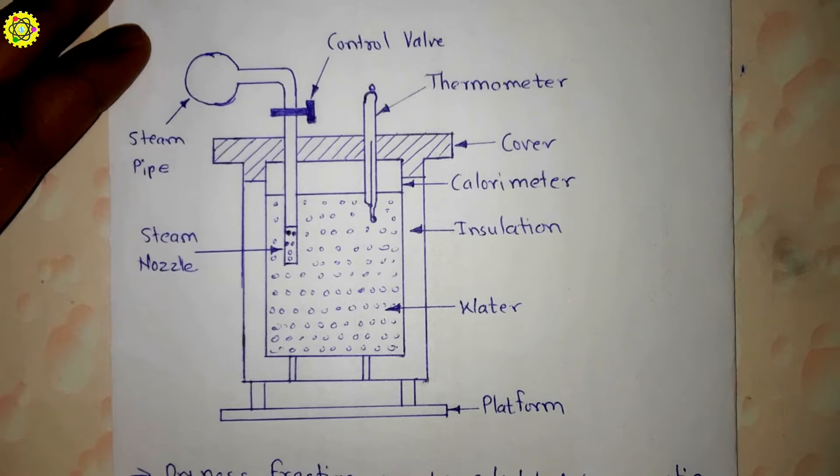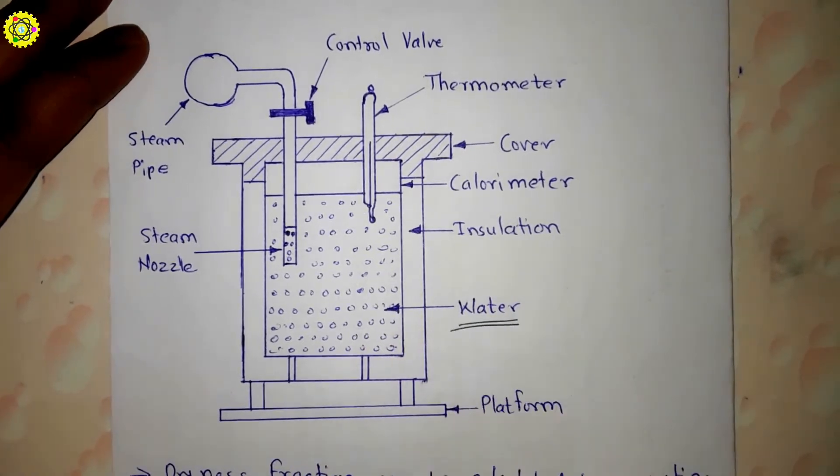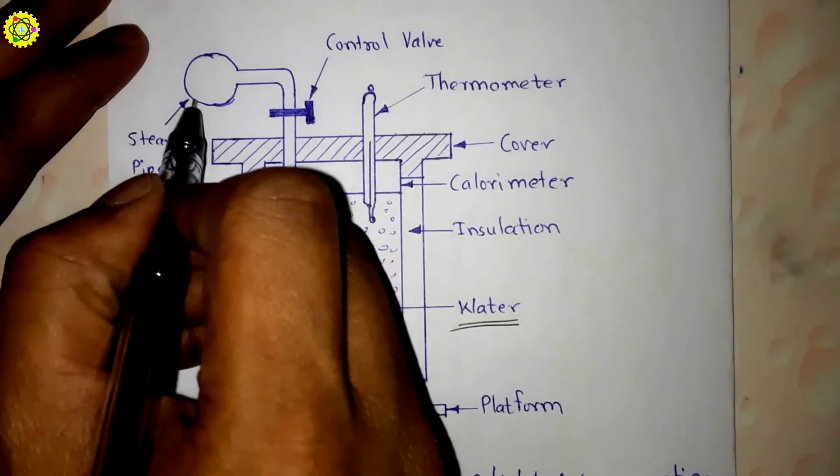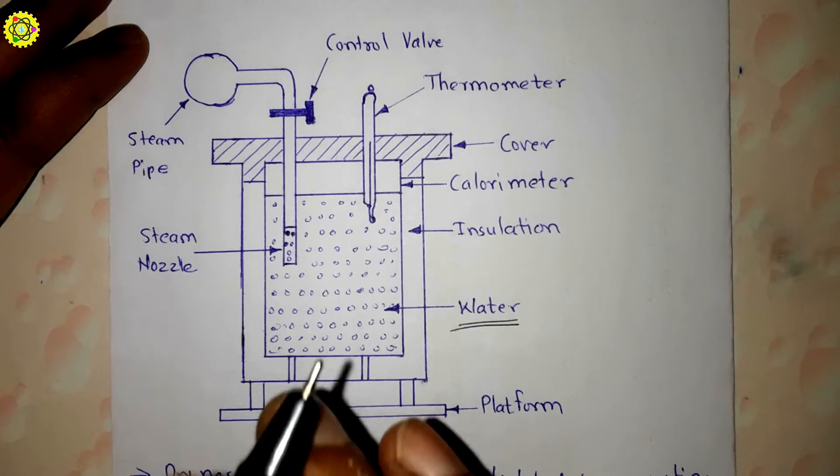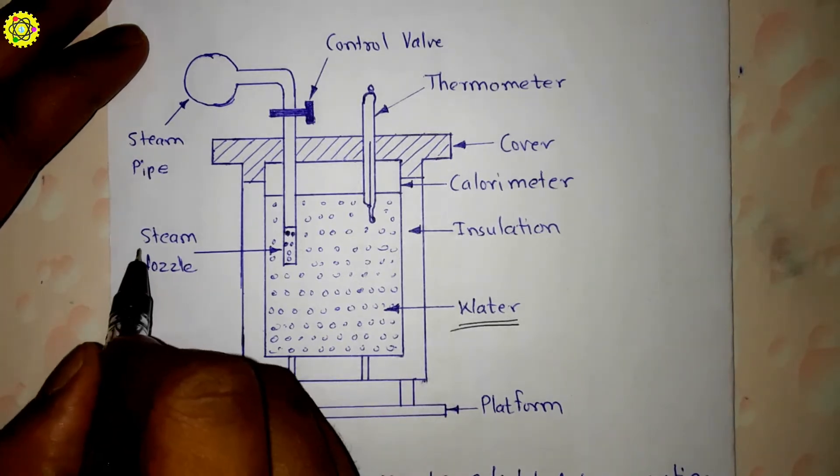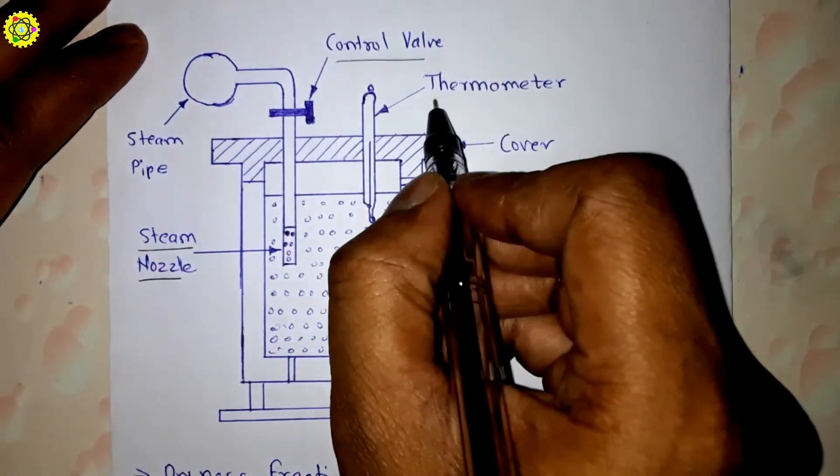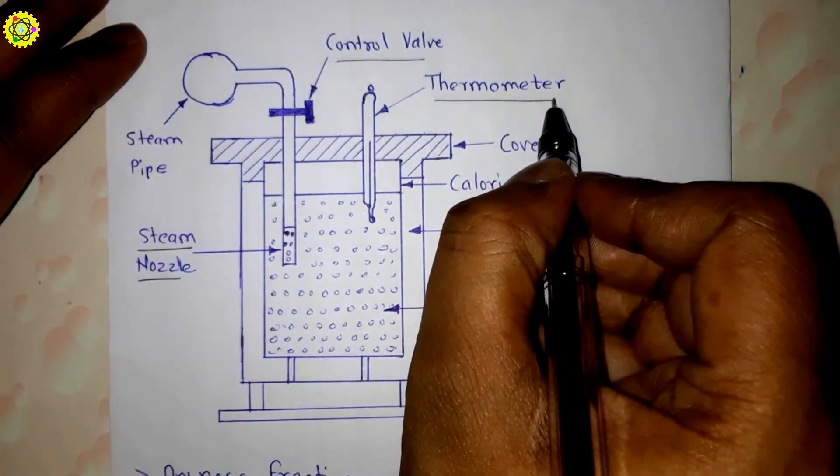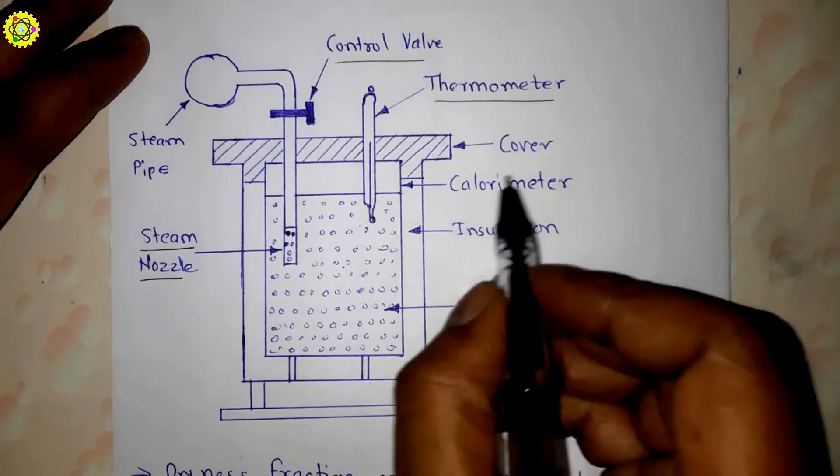This barrel calorimeter is filled with known quantity of water. From this steam pipe we add the known quantity of wet steam. The steam nozzle as you can see here, this is the control valve.